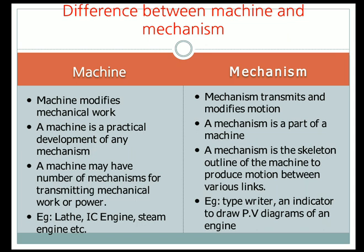A machine is a practical development of any mechanism. For example, the slider crank mechanism — which we discussed in a previous class — has one slider, one rotating crank, and one connecting rod between the slider and crank.